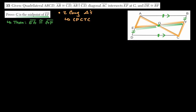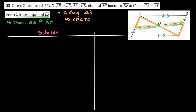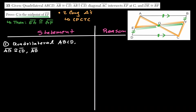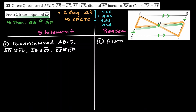Our strategy is to show that triangles EAG and CGF are congruent, then use CPCTC to conclude EG ≅ GF. Let's create our statement and reason table. The first statement lists all given information. We can identify vertical angles AGE and FGC, which are congruent.